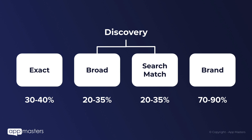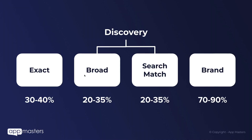A reminder: exact match campaigns tend to convert the best from tap to install. Broad and search match tend to perform less effectively because Apple is trying to find new keywords — they may hit or miss. We've seen roughly 20%, sometimes as low as 17%, conversion rate on these two campaigns. So you want to set a pretty conservative cost per tap in the very beginning, see where it goes, and then eventually increase that cost per tap.